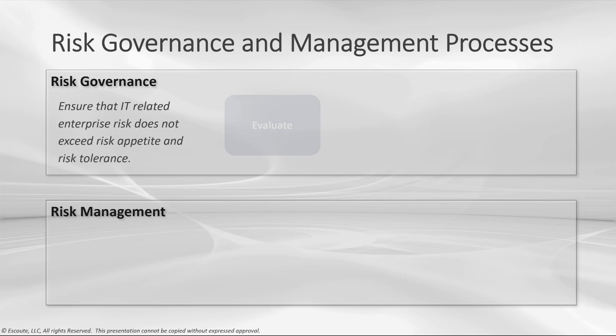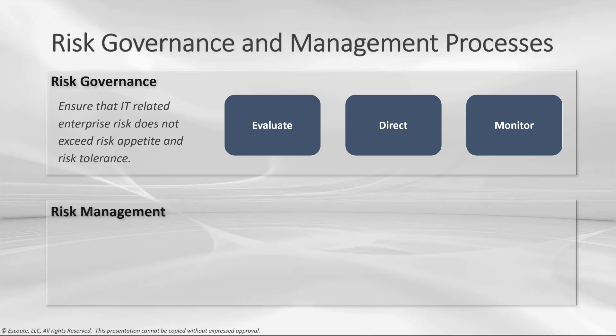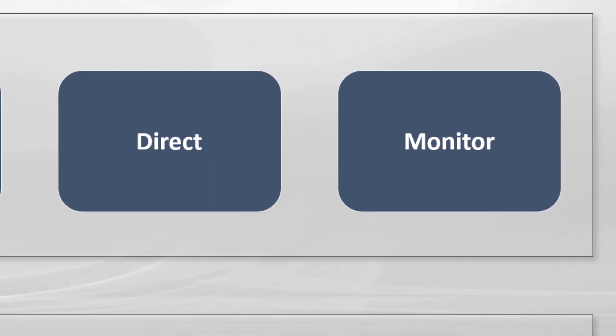Risk governance ensures that IT-related enterprise risk does not exceed the appetite and tolerance levels. It has three parts: first, evaluate risk — understanding the organization and its context related to IT risk, and determining appetite and tolerance levels. Second, direct — integrating the IT risk strategy and communication plans into risk management practices and operational activities. Third, monitor — tracking the extent to which the risk profile is managed within appetite and tolerance thresholds, and reporting any risk management issues to the board or executive committee.